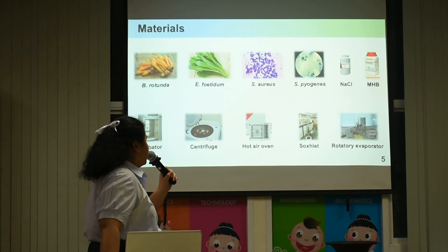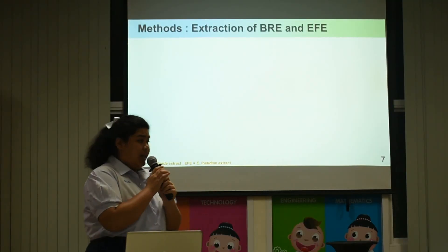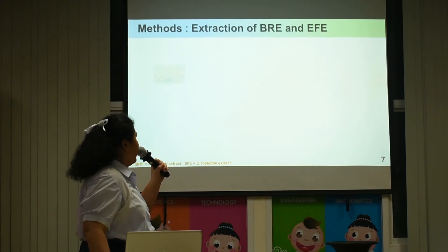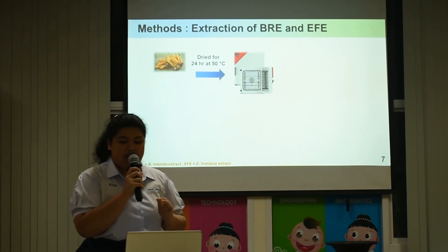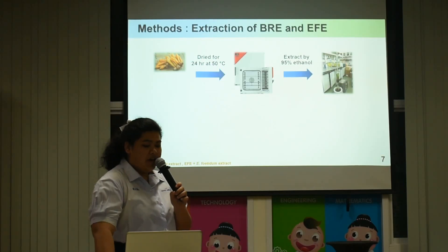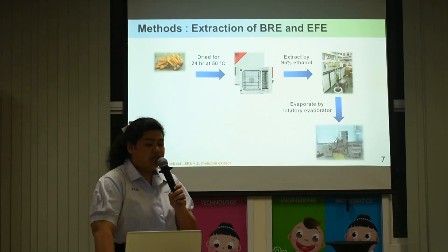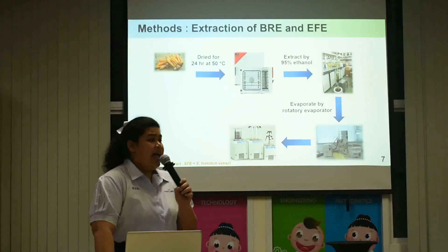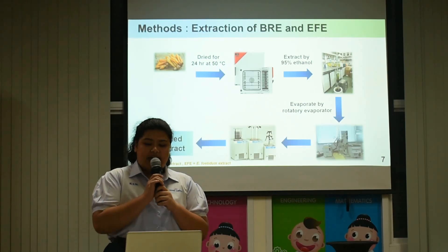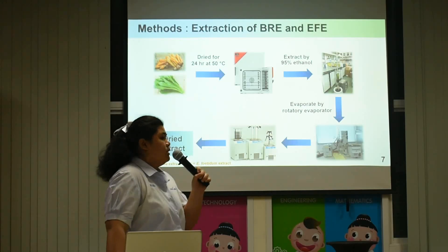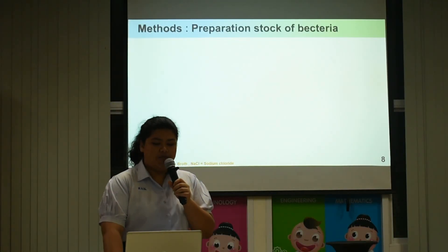Here are all the materials I used for my project. The first method is extraction of BRE and EFE. First, bring finger root into a hot air oven at 50 degrees Celsius for 24 hours, then extract by 95% ethanol in a Soxhlet extractor. Evaporate the solvent by rotary evaporator, then bring it into a freeze dryer to obtain dry extract. The same method is used for coriander.